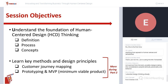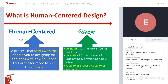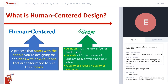Let me share our definition of human-centered design thinking. There are two key phrases: human-centered and design. Human-centered is a process that starts with the people you are designing for and ends with new solutions that are tailor-made to suit their needs. Keywords: it starts with the people, ends with new solutions, and the word needs. Design is a word that is both a noun and a verb. As a noun, it is the look and feel of a final object. As a verb, it's the process of originating and developing a new object. Hence, it is both the process and the result, and the quality of the process is directly related to the quality of the design outcome.